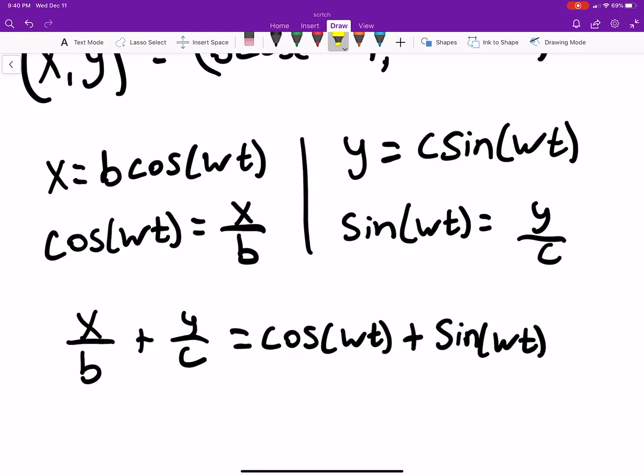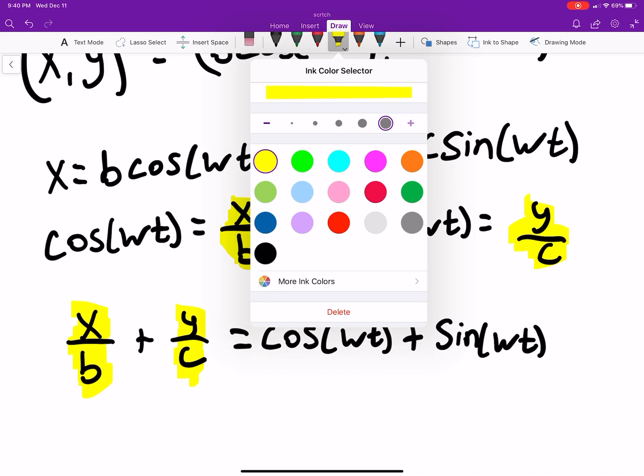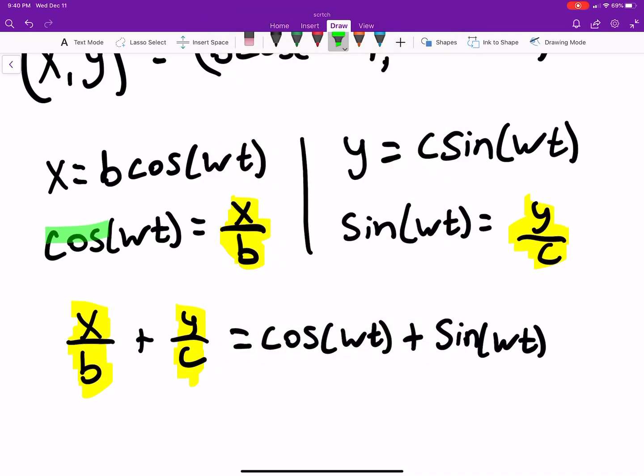So what we're doing is x over b, we're adding these two together, but because of what we just saw, that'd be equivalent to just adding cosine of omega t and sine of omega t. We didn't break any rules of algebra by writing this out. Hopefully that makes sense.